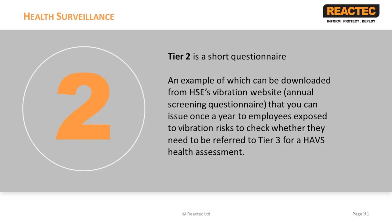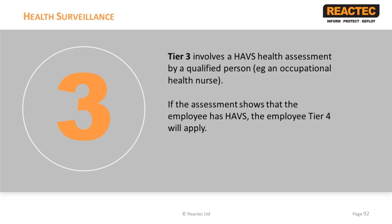Tier 2 is a short questionnaire, which can be downloaded from the HAV website, and should be performed once a year after the commencement of employment. It helps identify if employees need to be referred to Tier 3 due to showing signs of HAVs. This questionnaire should be repeated annually to form the routine health surveillance for employees who are at risk but have not yet reported any symptoms suggestive of HAVs. It is useful to have a responsible person appointed as part of the health surveillance program to communicate how the screening questionnaire operates. Such a person should be carefully selected for their experience with the working environment, to gain the confidence and cooperation of employees.